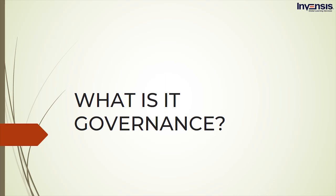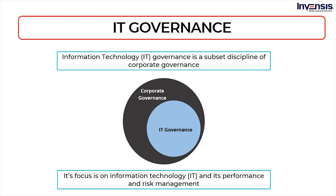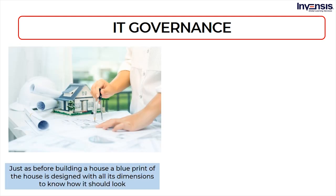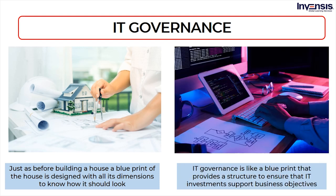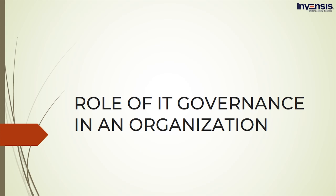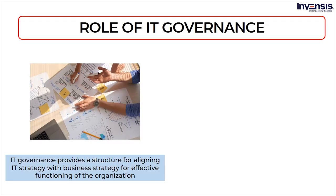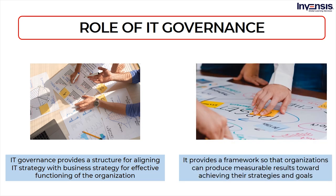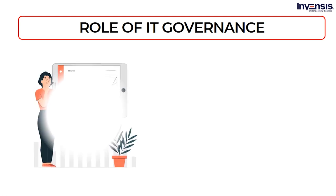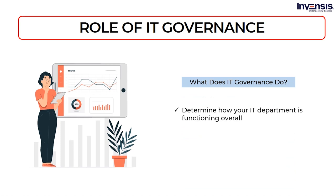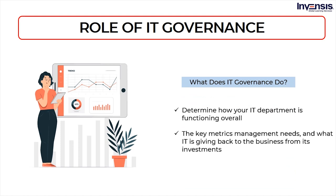Information technology, IT, governance is a subset discipline of corporate governance. Its focus is on information technology, IT, and its performance and risk management. Just as before building a house a blueprint is designed with all its dimensions to know how it should look, IT governance is like a blueprint that provides a structure to ensure that IT investments support business objectives. IT governance provides a structure for aligning IT strategy with business strategy for the effective functioning of the organization. It provides a framework so that organizations can produce measurable results toward achieving their strategies and goals. IT governance determines how your company's IT department is functioning overall, the key metrics management needs and what IT is giving back to the business from its investments.